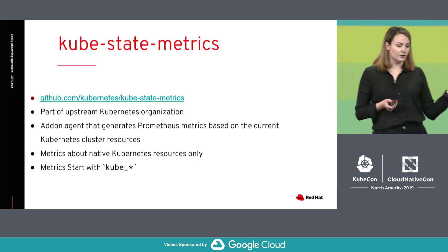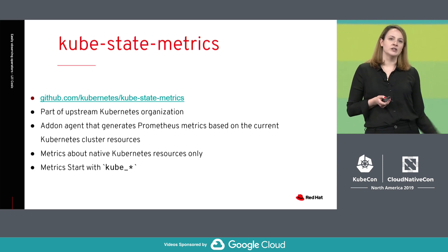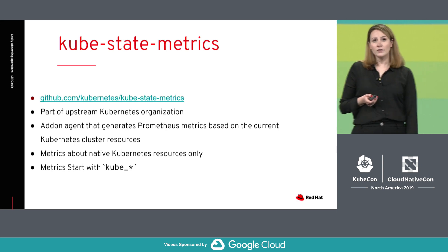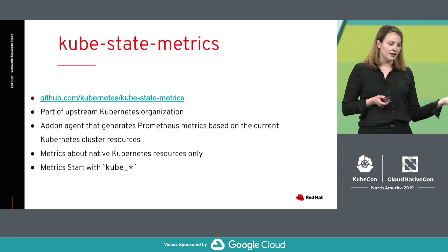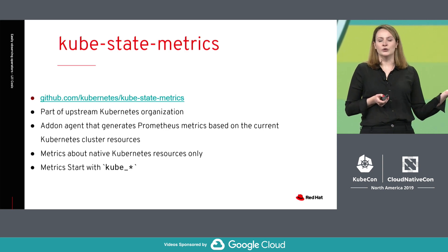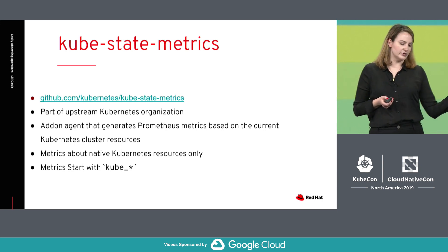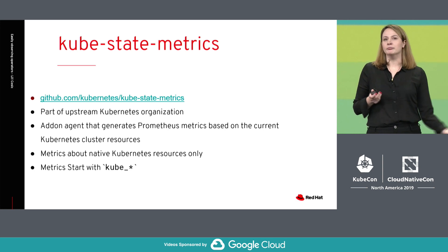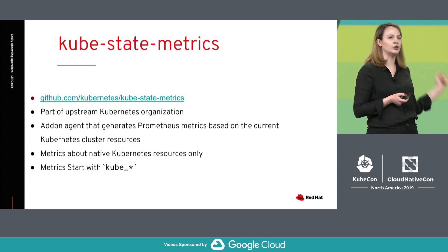Before we get to the code, we want to understand one more component, and that is kube-state-metrics. Kube-state-metrics is part of the upstream Kubernetes organization, and it's an add-on agent to basically generate Prometheus metrics based on your Kubernetes cluster resources — metrics about deployments, config maps, secrets, et cetera. All the metrics start with the prefix kube.